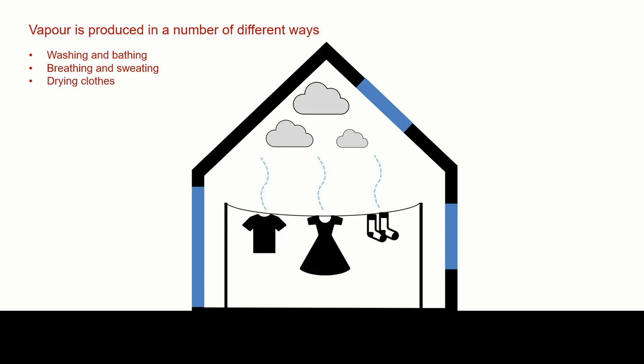We dry clothes inside. We unfortunately live in a climate where drying clothes outside isn't always possible, so we put things on radiators or hang things within bathrooms. If you take a jumper out of the tumble dryer, it might have 300 to 500 milliliters of water in it, and by the time it's dry, that moisture has gone into the warm atmosphere inside the building.